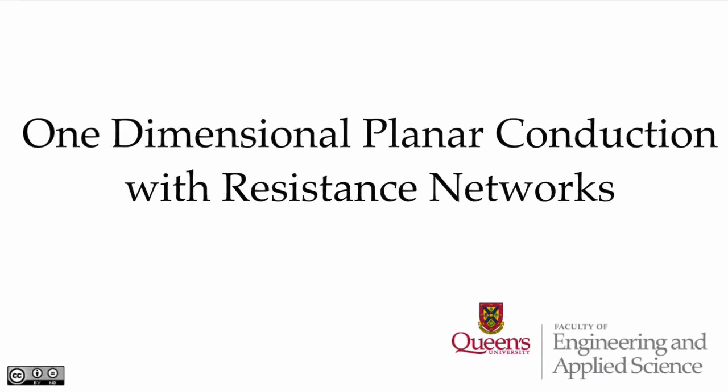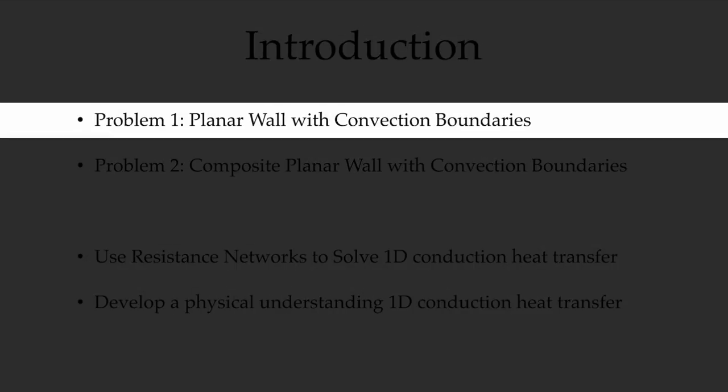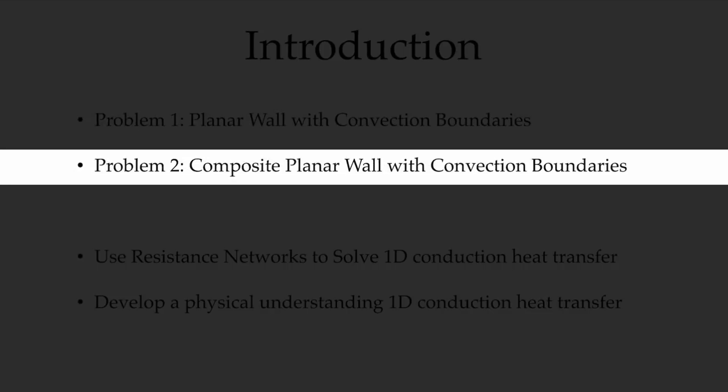In this video, we're going to look at one-dimensional planar conduction and we're going to use resistance networks in order to solve those problems. We're going to look at two problems in this video. The first one is simply a planar wall with convection boundaries. We've seen this before, but we'll solve it again directly with resistance networks. And in problem two, we'll add to that wall and look at a composite planar wall, again with the same convection boundaries.